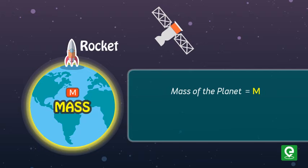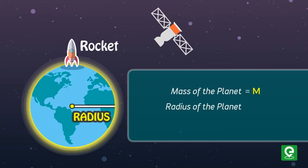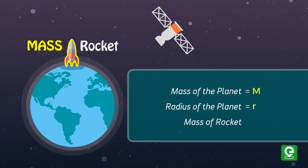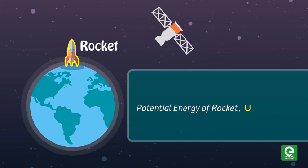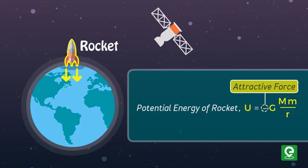Consider the mass of the planet is equal to M, radius of the planet is equal to R, mass of the rocket is equal to small m. Potential energy of rocket on surface of planet is minus GMm upon R. Here the negative sign implies that the force is attractive in nature. Also, potential energy of the system is always negative.